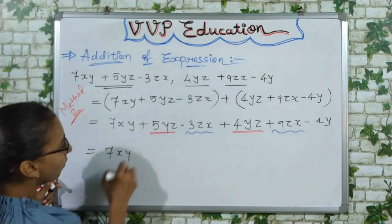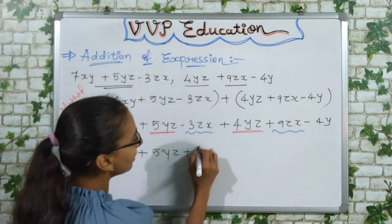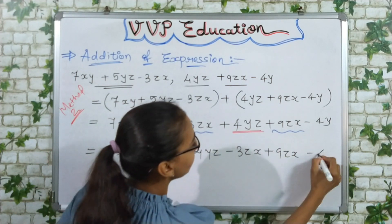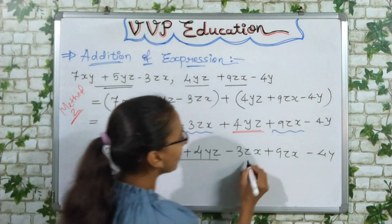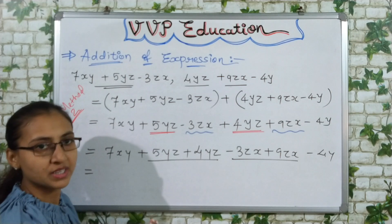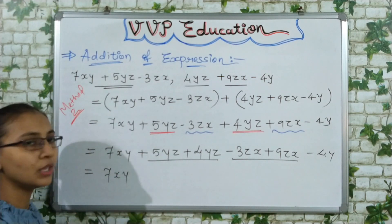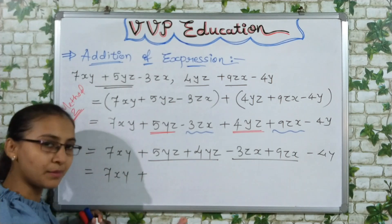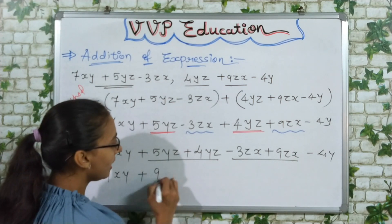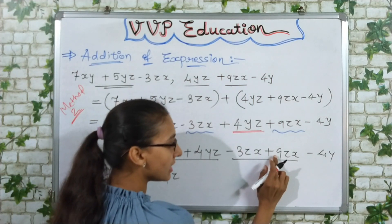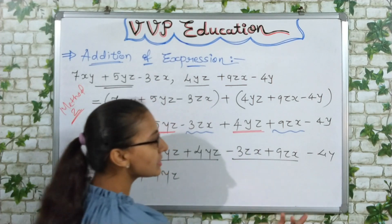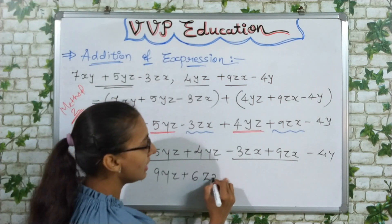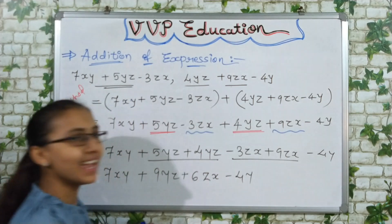Now I rearrange combining like terms: 7xy as it is, then plus 5yz plus 4yz, then minus 3zx plus 9zx, then minus 4y. Now performing the operations: 7xy stays as it is; 5 plus 4 equals 9, giving 9yz; for zx, minus 3 plus 9 — minus plus gives minus, 9 minus 3 equals 6, 9 is greater and positive, so plus 6zx; and minus 4y stays as it is.